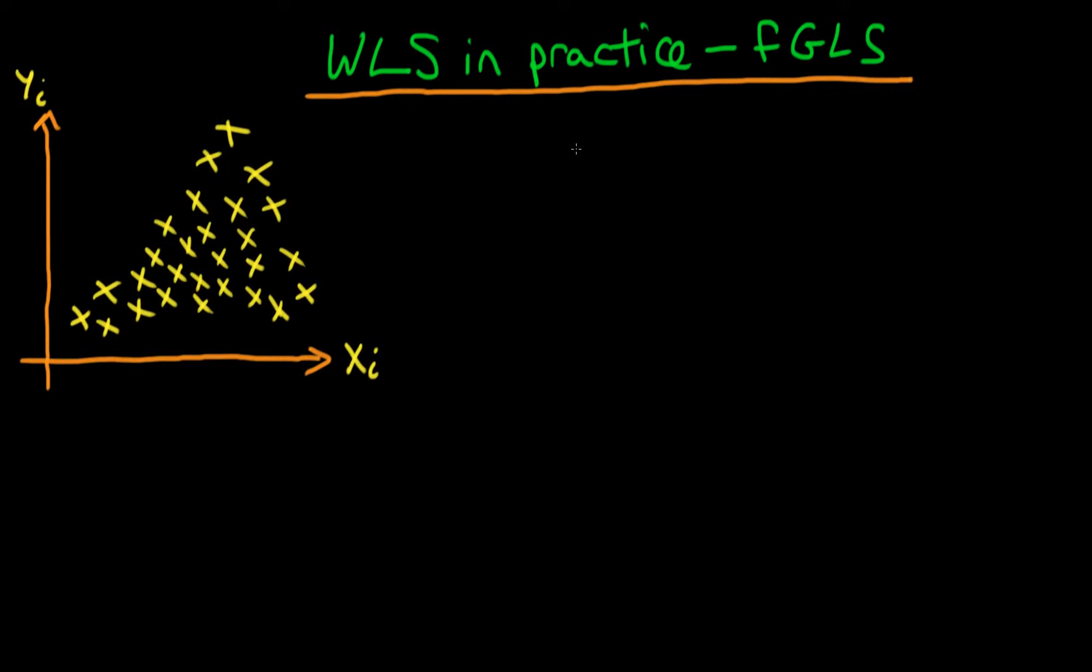In this video I want to talk about how we actually go about estimating weighted least squares models in practice, and the name that this goes by in the literature is feasible generalized least squares. The F for feasible means that we can actually feasibly do this.